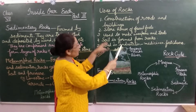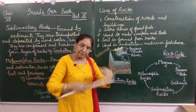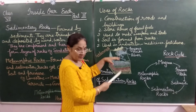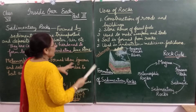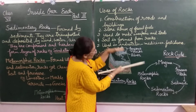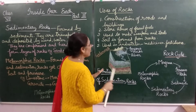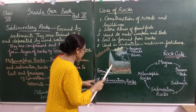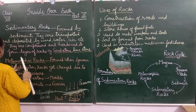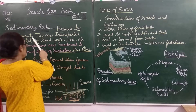Sediments continue to be carried by the river, forming a second layer, third layer, fourth layer. With the passage of time, because of heat and their own weight, they are compressed and cemented together to form a rock. These rocks are known as sedimentary rocks. For example, sandstone and limestone.